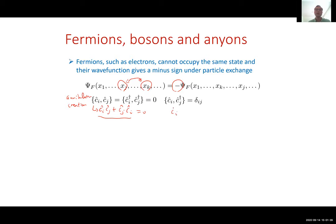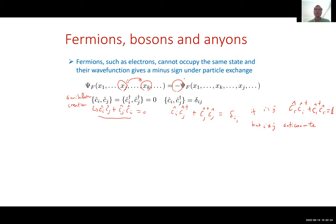The anti-commutator c_i c_j + c_j c_i equals zero. When one is a creation and the other an annihilation operator, the anti-commutator gives delta_ij. Specifically, c_i c_i† + c_i† c_i = 1 (identity) when i equals j, and they simply anti-commute when i is not equal to j. The anti-commutation is the reason for the minus sign in fermion exchange.